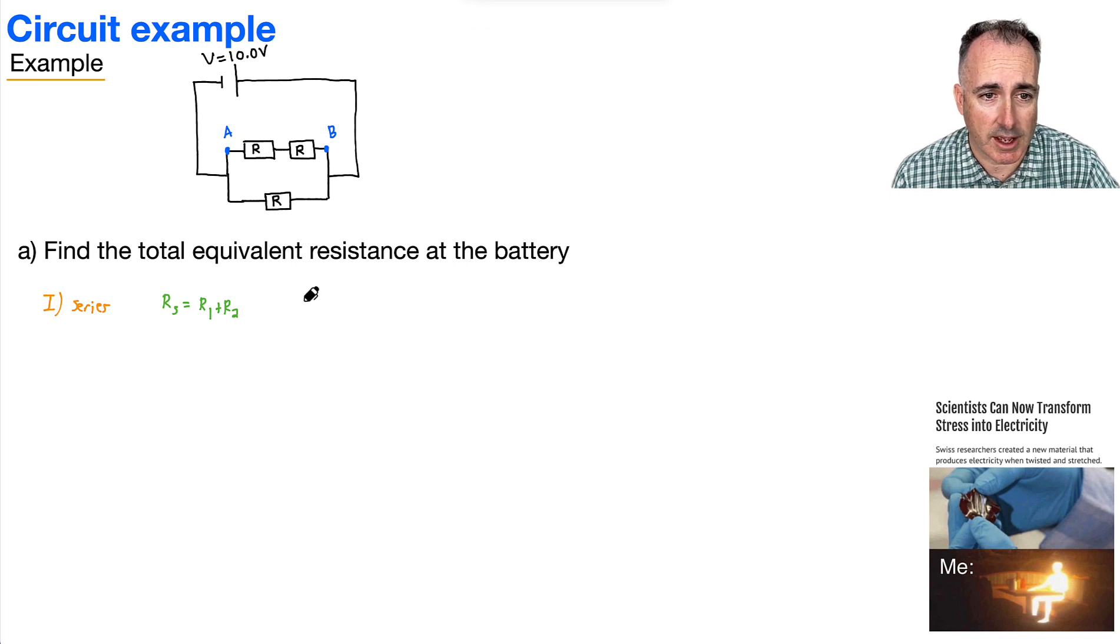In our case then, what would you say? I would say then RS, the total equivalent resistance of the series part at least, will be just R plus R, which is just equal to 2R. So what does this mean?